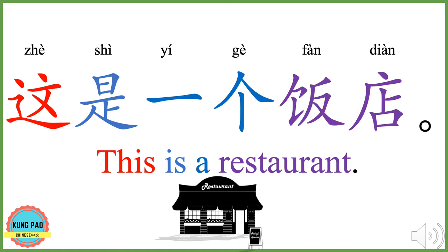这是一个饭店。 这 means this. 是 means is. 一个 means one. 个 is the most commonly used classifier in Chinese. 饭店 means restaurant. 这是一个饭店 means this is a restaurant. Now your turn.